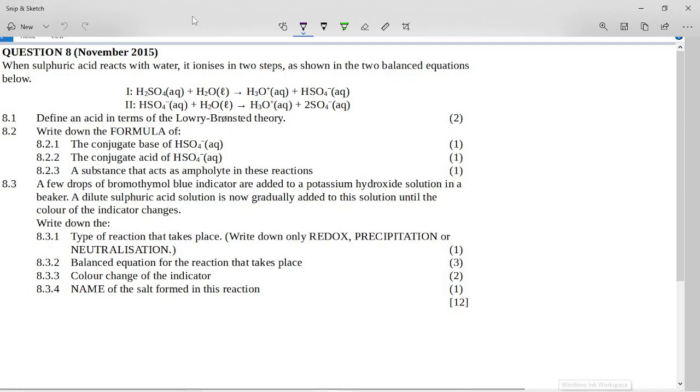Okay, so it says here define an acid in terms of the Lowry-Brønsted theory. So that one's easy. An acid is a proton donor. Remember a proton is just an H plus.